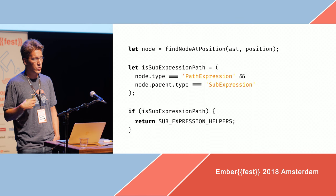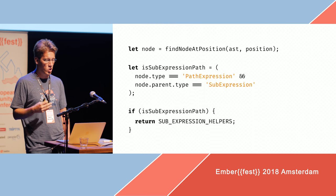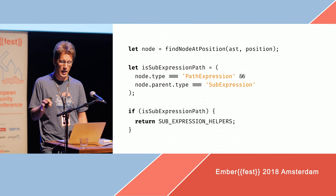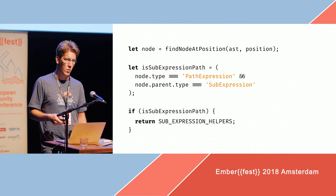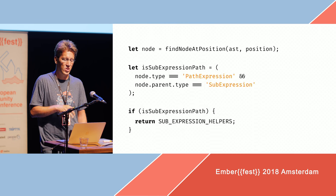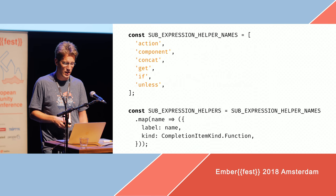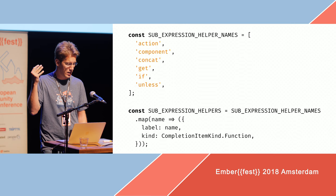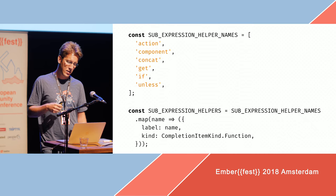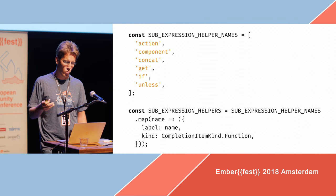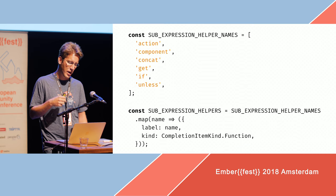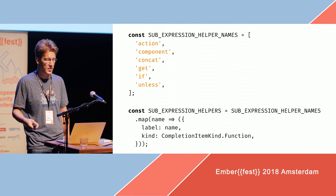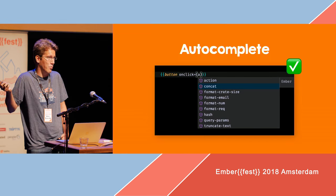Next thing is we need to filter out all the other cases — we're just interested in having a path expression inside of a sub-expression. If that is the case, we can return the sub-expression helpers, which is just a static array. The valid sub-expression helpers are action, component, concat, get, if, and unless. All we need to do is convert them into completion items — wrapping them in an object with a label and the right kind so that they get suggested properly in VS Code. Autocomplete done. That was easy.